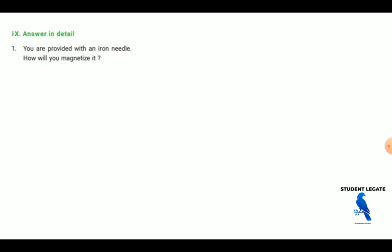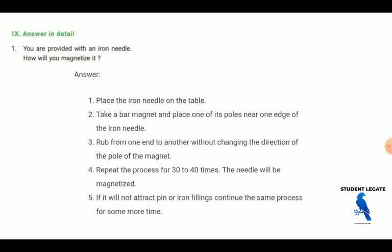You are provided with the iron needle. How will you magnetize? You will get an iron needle, so you will magnetize. First, what we are going to do is, place some iron in the table, take a bar magnet and place one of its pole near the edge of the iron needle, rub from one end to another end without changing the direction of the pole in the magnet. The repeated process for 30 to 40 minutes, the needle will magnetize. If it will not attract the pin or iron, filling continues the same process for some time more.